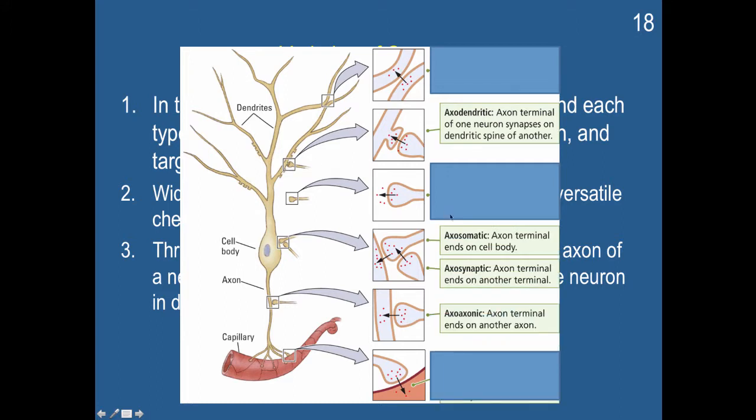Then you also have axosomatic, axosynaptic, and axoaxonic. So in this instance, the axon terminal ends on the cell body, or the axon terminal ends on another terminal. And then the axoaxonic, the axon terminal ends on another axon.